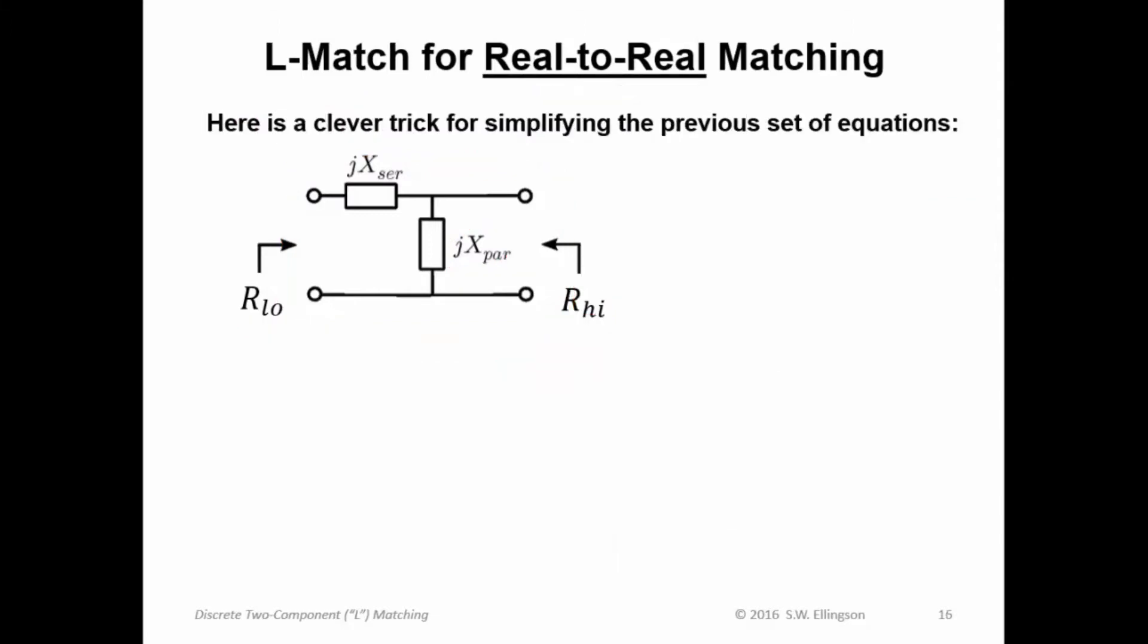Okay, here is a clever trick for simplifying the previous set of equations. What you do is you define a variable here, Q. Now, at the moment, Q is just shorthand for this quantity here. You will find that if you define this quantity, Q, being the square root of R_high divided by R_low minus one, and you introduce this into the previous set of equations, those equations get dramatically simpler.